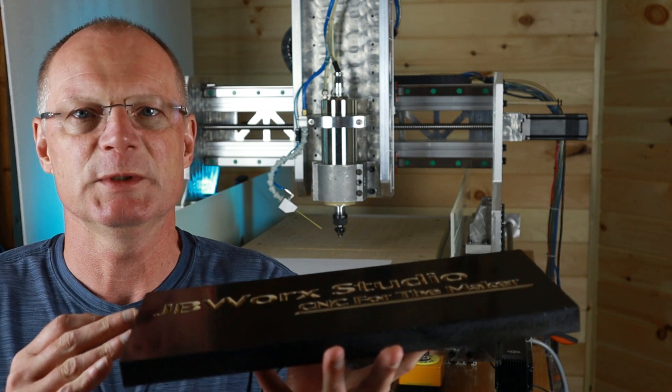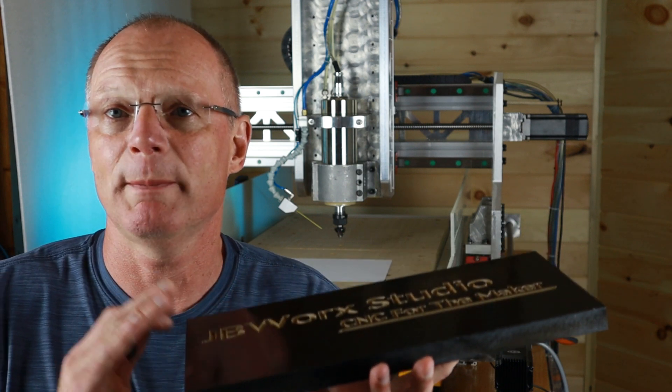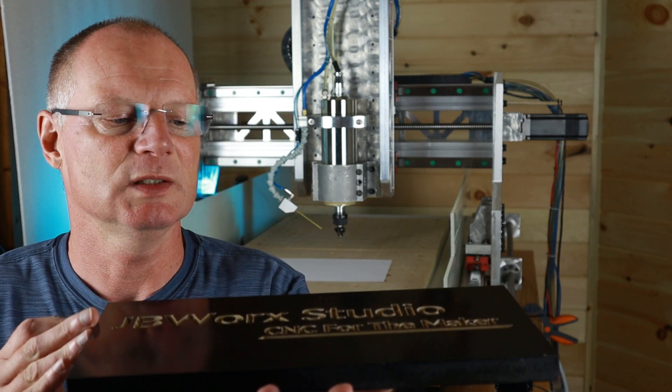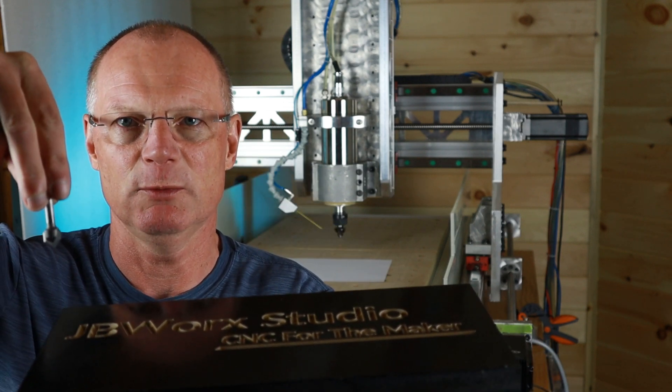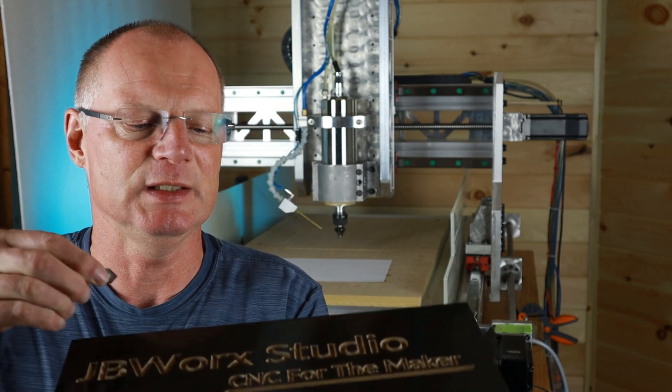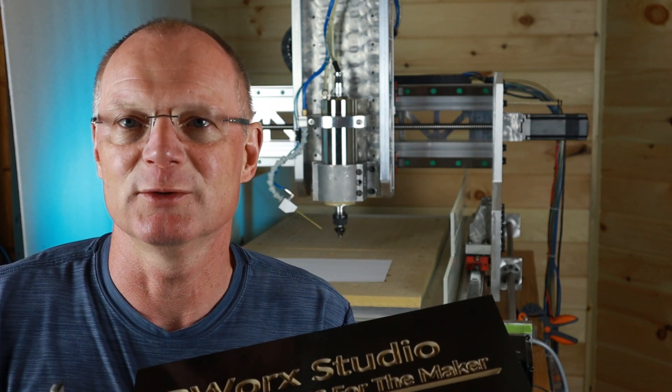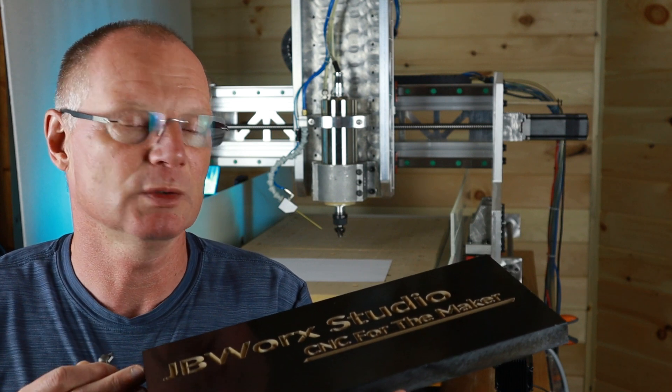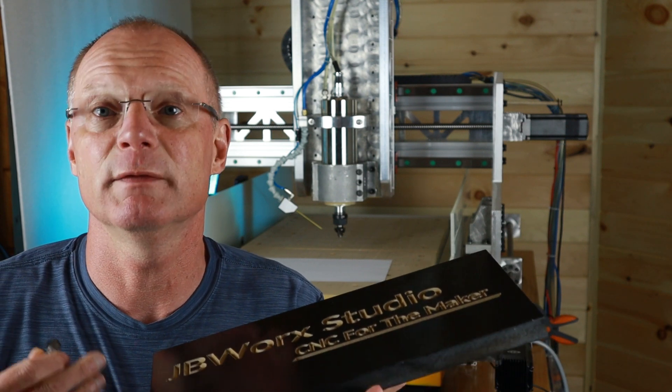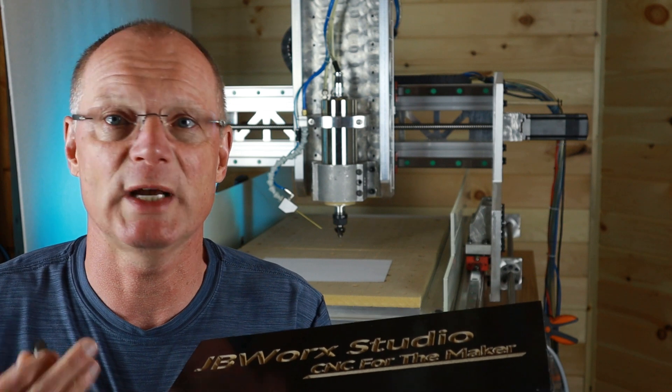Next is the surface of the material. Your board cannot be bowed at all, because if it's bowed the router bit would go with the same depth and the width of the letters would change. It's good practice to make sure your material is dead flat, and if it's not, surface it right on your machine.